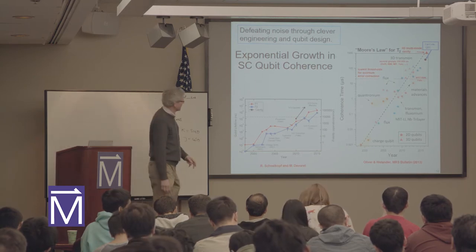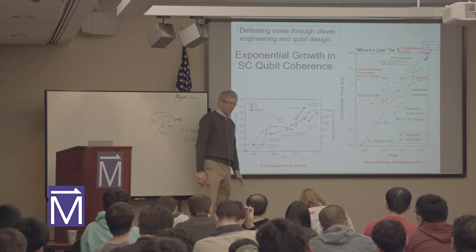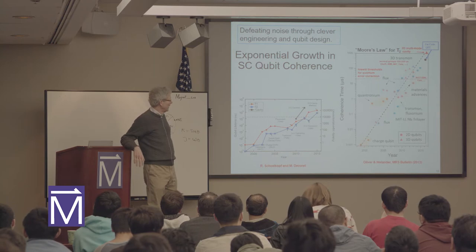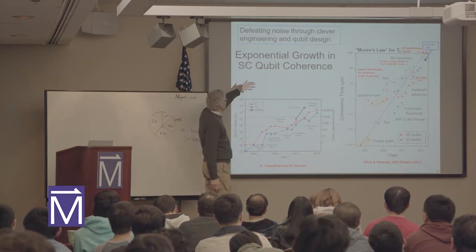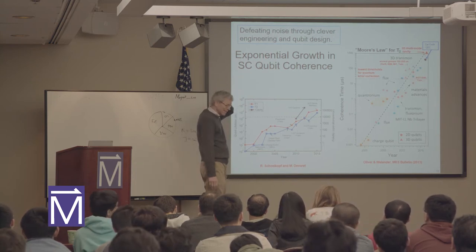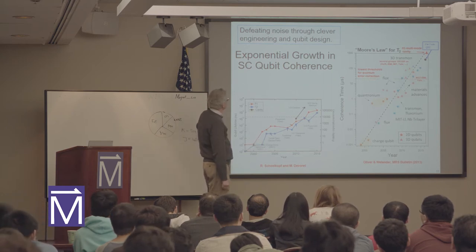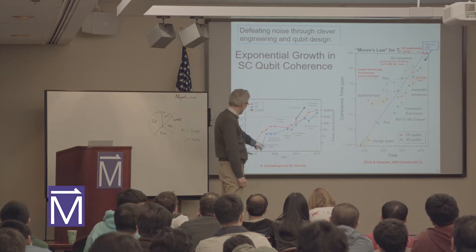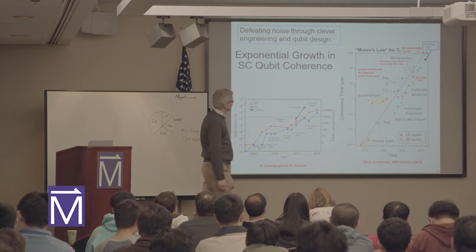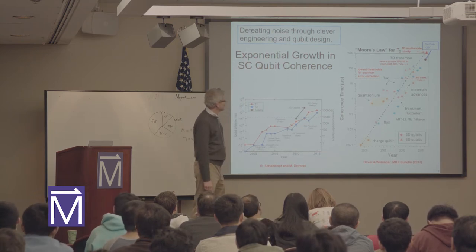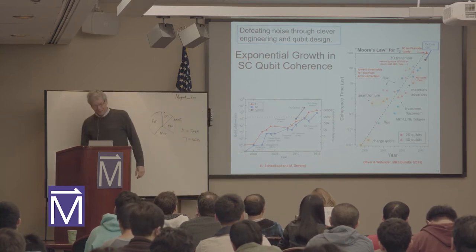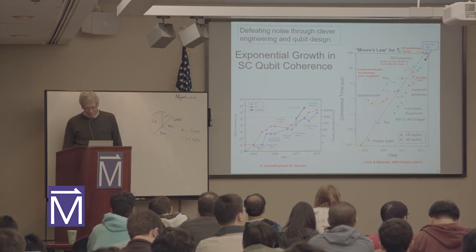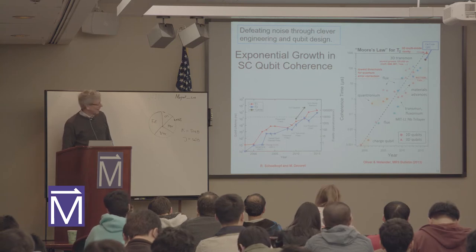Despite this great sensitivity, things looked very bad in 1999 when the first superconducting qubit was built by Nakamura in Japan — the phase coherence time was probably a nanosecond. But by clever engineering and qubit design, we've made qubits that are insensitive to certain types of noise. Coherence times have risen six orders of magnitude since people initially laughed at the idea that superconducting qubits could make a quantum computer. So there's been tremendous exponential progress, and it may well continue.